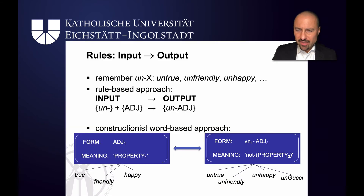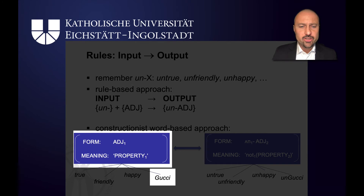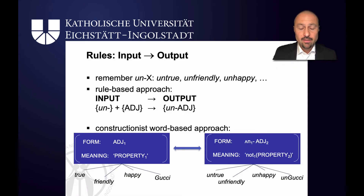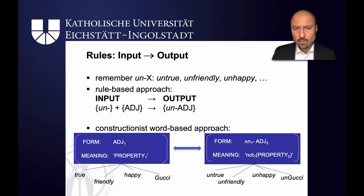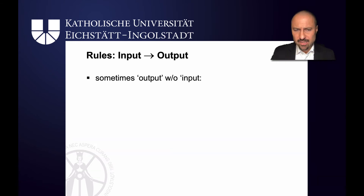And once you've heard someone say 'this is so ungucci,' because the relationship between the two schemata is bi-directional, I can also go in the other direction — I now know I can use Gucci as an adjective. Whereas in an input-output approach you can only go from one element to the other, schema-based approaches also allow us to explain how we can get something like 'ungucci,' which looks like an output that hasn't got an input. There are other cases in language where you have the output part but not the input.